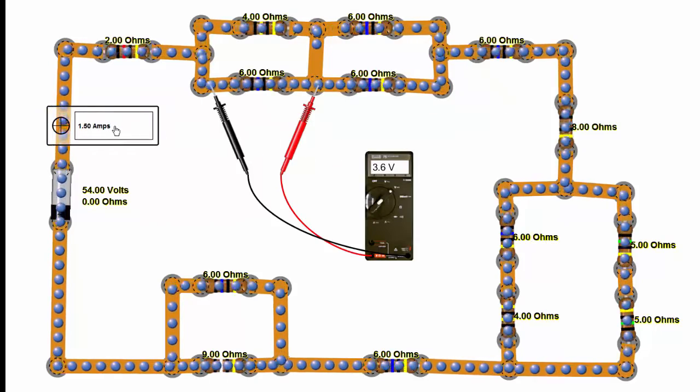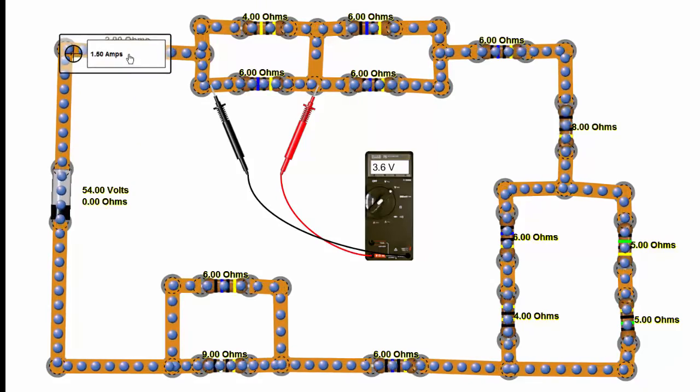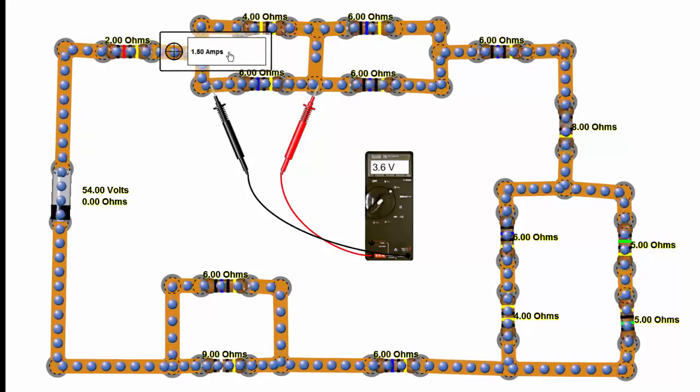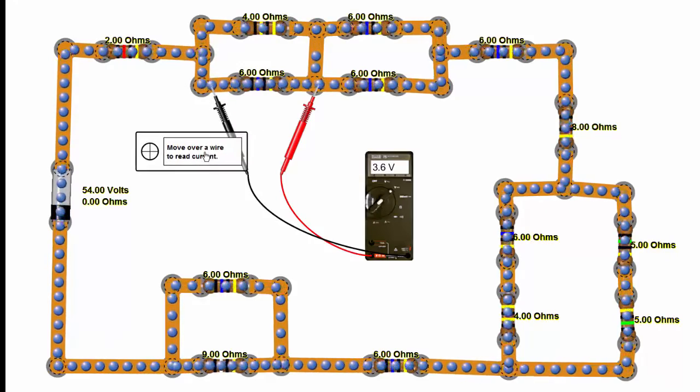Now there's no reason for this current to be any different anywhere else. We can go anywhere in the circuit and measure 1.5. Now where we do have a problem is when it comes to a junction where there's two resistors in parallel.